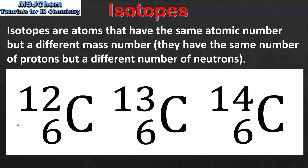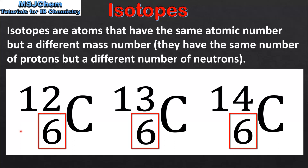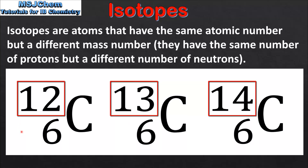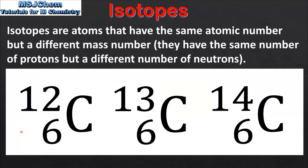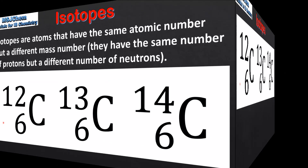Here we have the three naturally occurring isotopes of carbon, which are carbon-12, carbon-13 and carbon-14. As we can see, each isotope has the same atomic number but the mass number of each isotope is different. So next we'll look at these three isotopes in more detail.